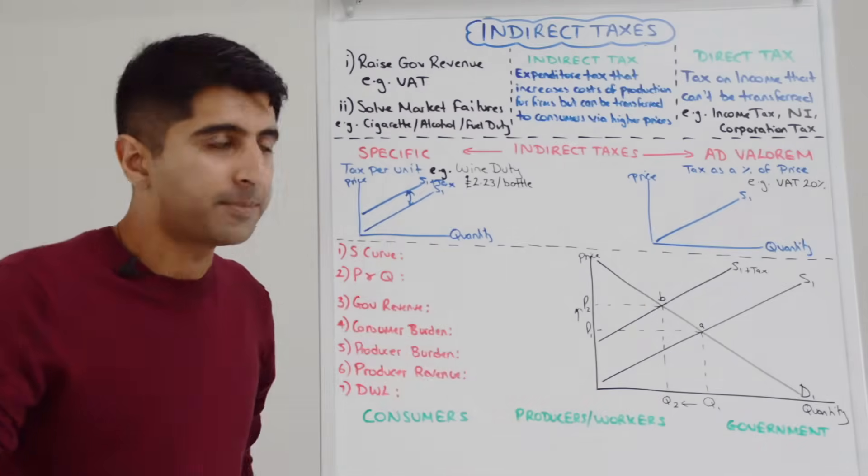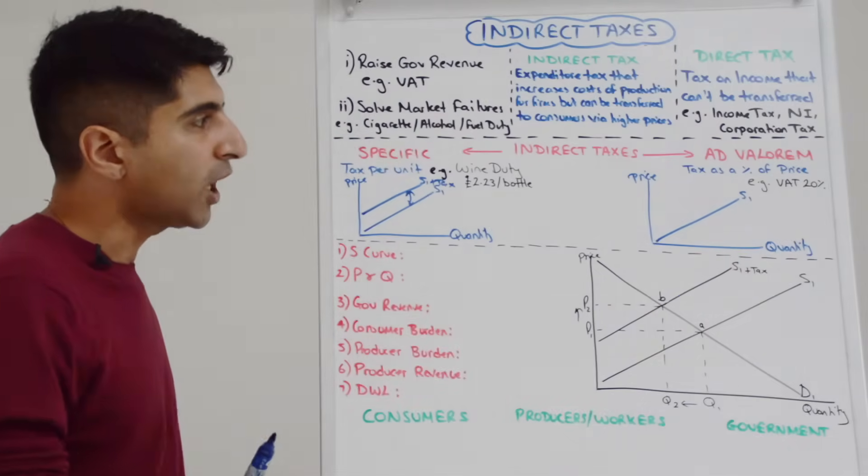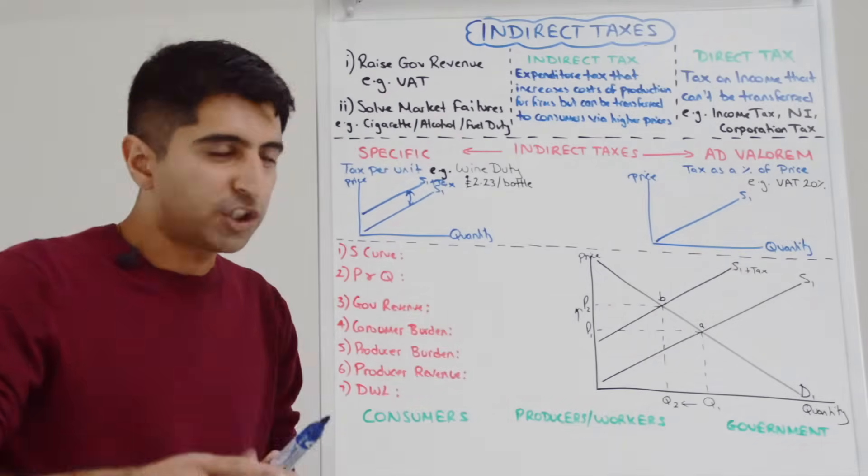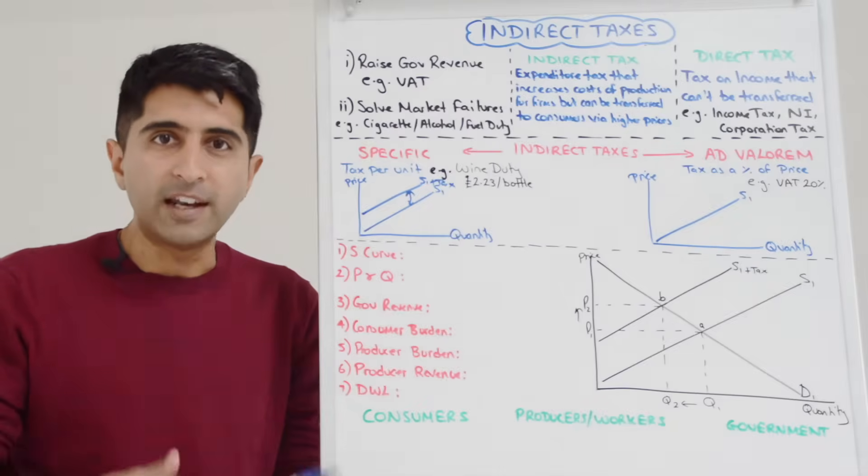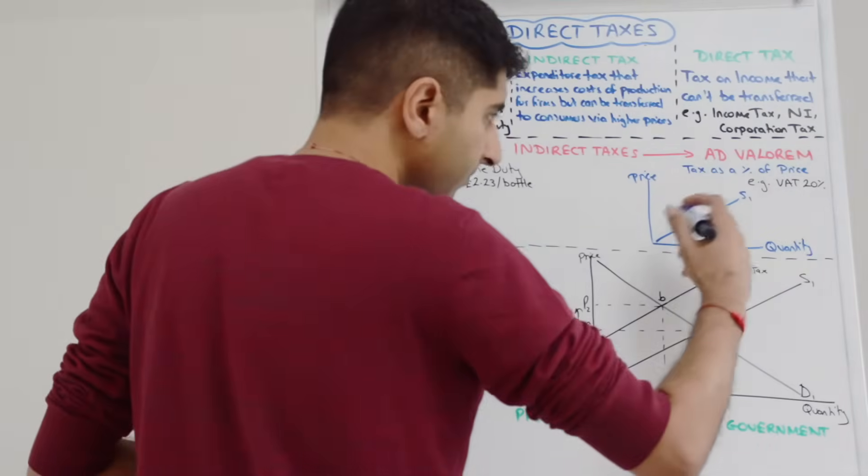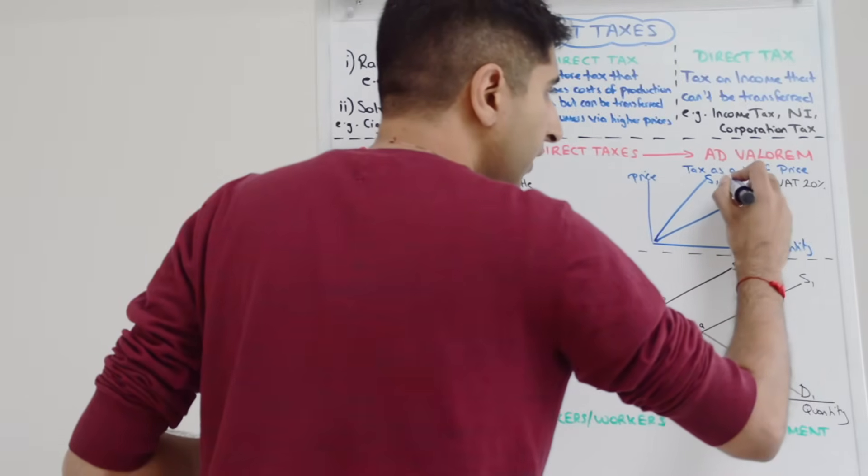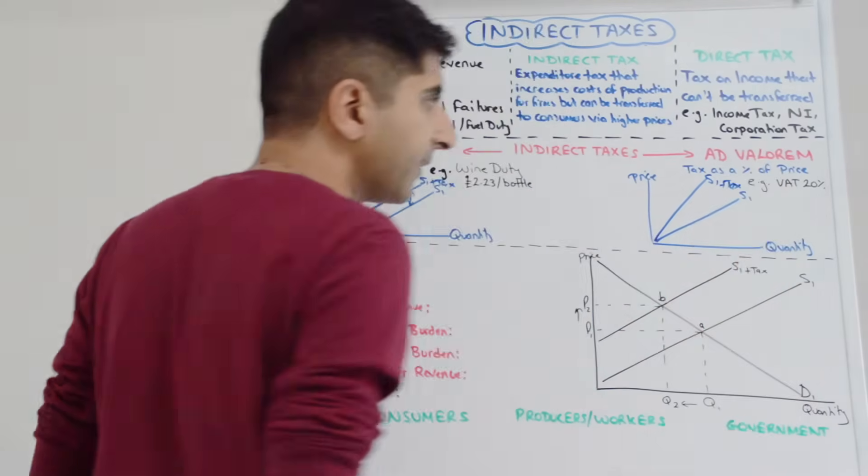Whereas an ad valorem tax is a tax as a percentage of the price being charged. What does that mean for the shift of the curve? Well take VAT which in the UK currently is 20%.